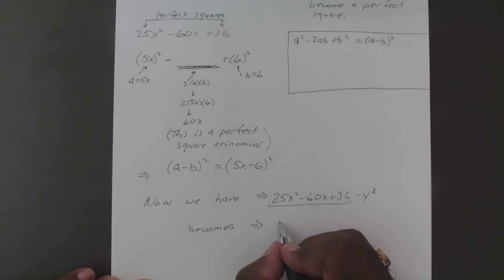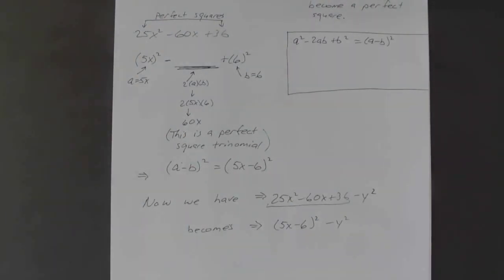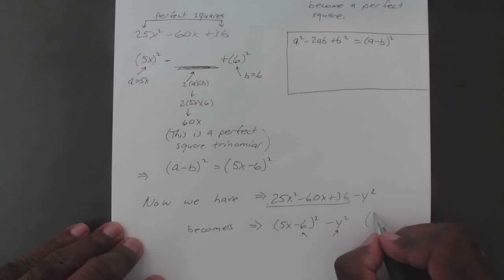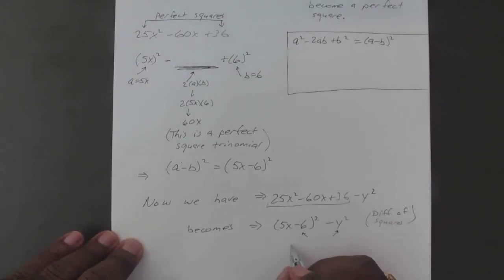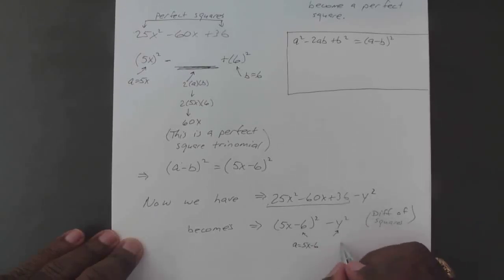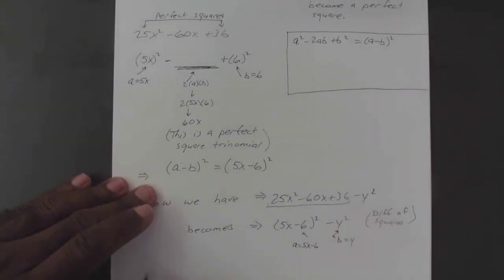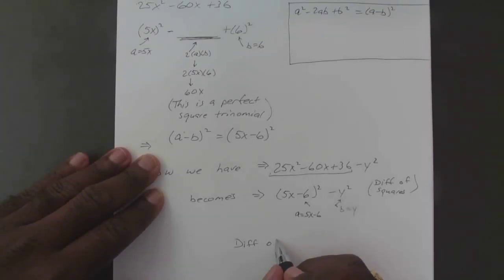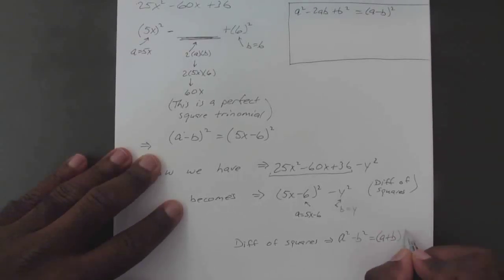It becomes (5x minus 6) squared minus y squared. So now we have our difference of squares, where a is equal to 5x minus 6, and b is equal to y. So if you plug it into your difference of squares formula, remember your difference of squares is a squared minus b squared equals (a plus b) times (a minus b).